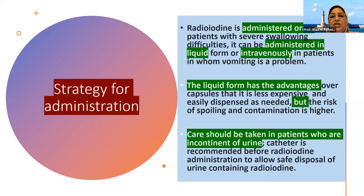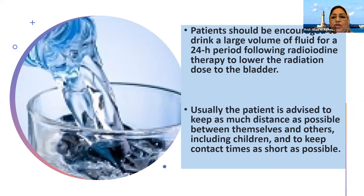The strategy of administration: in most cases, radioiodine is administered orally. In patients with severe swallowing difficulty, it can be administered in liquid form, or intravenously in patients for whom vomiting is a problem. The liquid form is less expensive and easily dispensed, but the risk of spilling and contamination is higher. Care should be taken in patients who are incontinent of urine; a catheter is recommended before administration to allow safe disposal of urine containing radioiodine. Patients should also be encouraged to drink a large volume of fluid for 24 hours following therapy to lower the radiation dose to the bladder.